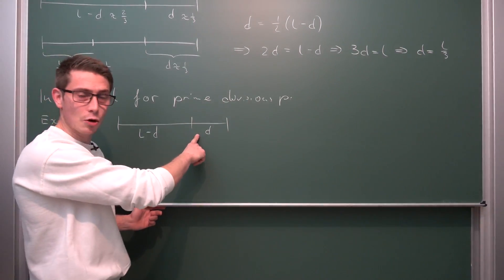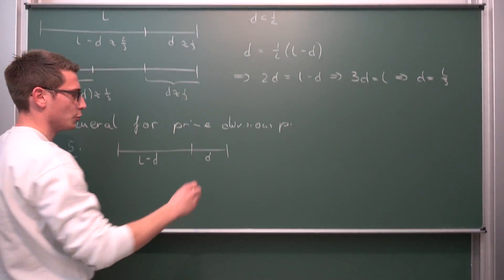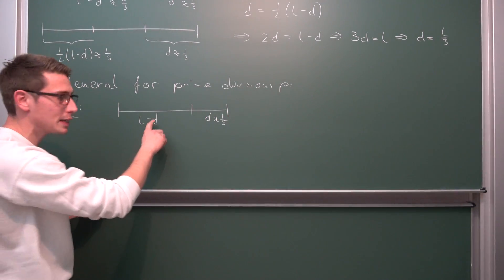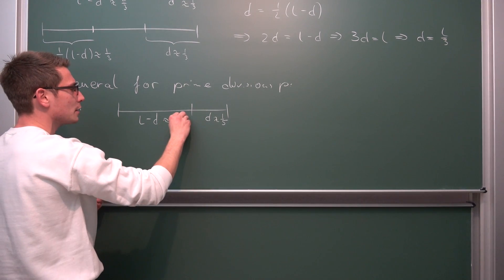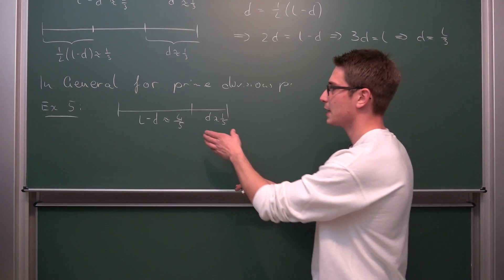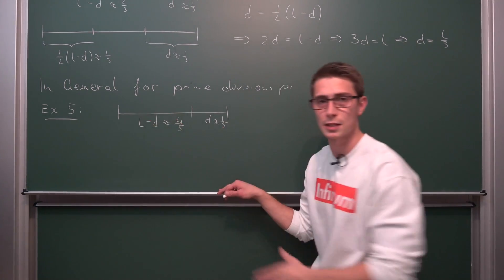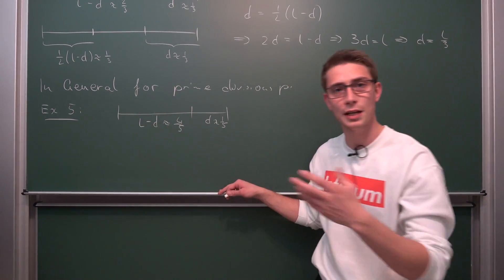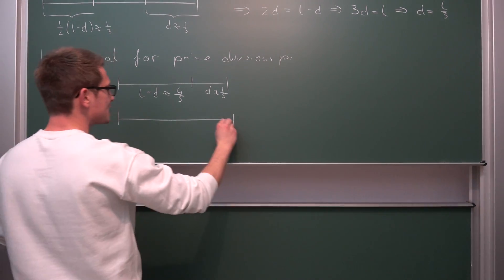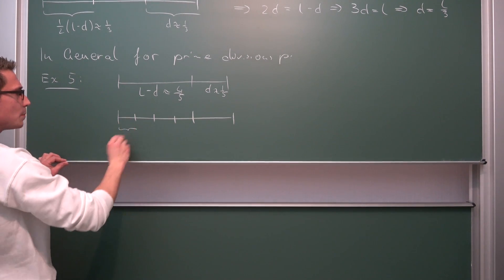Just think back: this right here is going to be roughly a fifth, just like our original guess with three was a third. So this right here is roughly a fifth, and L minus d is hence roughly four fifths. What we can do is extract a fifth part of L minus d from this interval by dividing this interval into quarters.